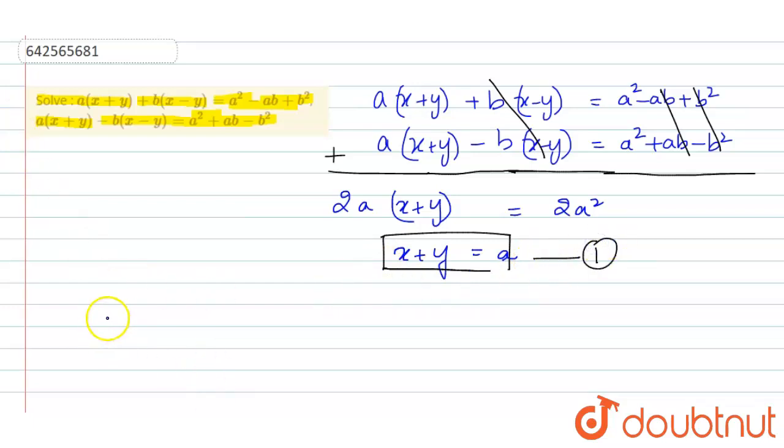Now let us write it again. The first equation is this one, plus b(x-y) = a² - ab + b². And if we subtract this, the signs will be changed. So let us now change the signs because we are subtracting it now.